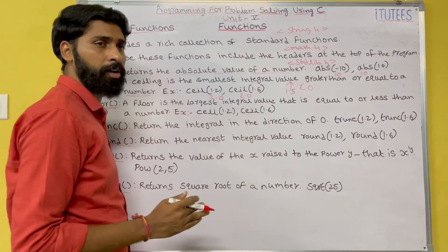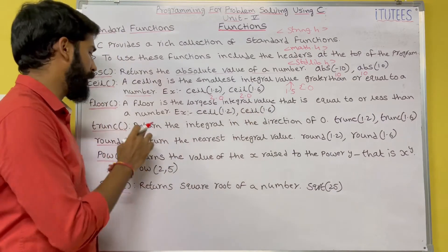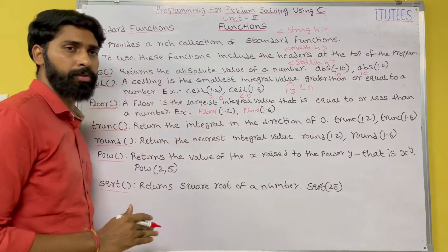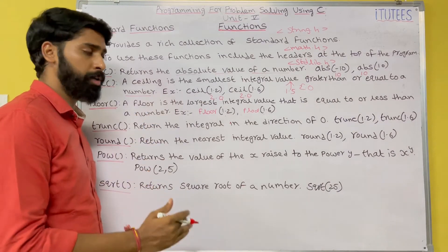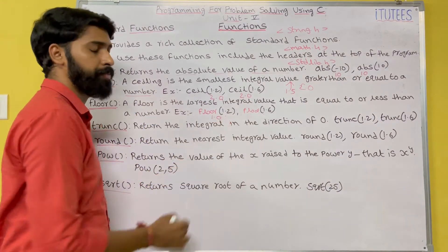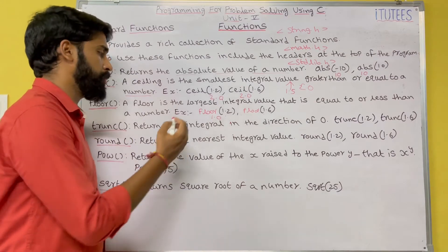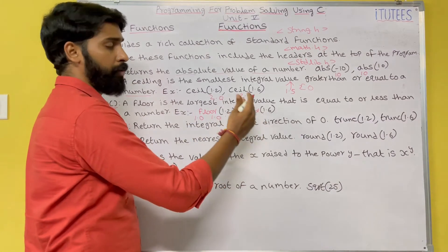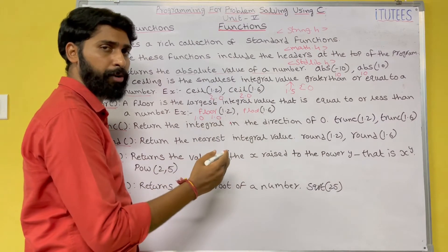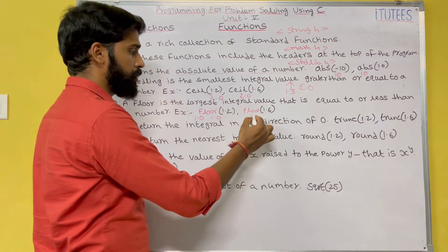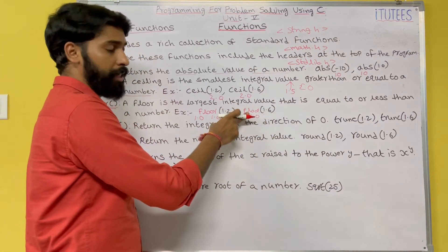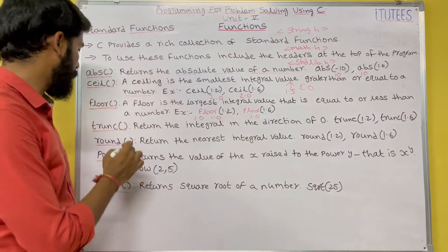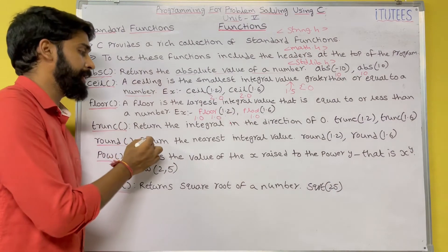Next is floor(). The floor is the largest integral value less than or equal to a number. So floor(1.2) returns 1.0, floor(1.0) returns 1.0, and floor(1.6) also returns 1.0. Note that ceil(1.6) would return 2.0, but floor(1.6) returns 1.0.